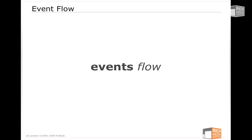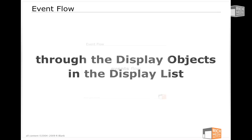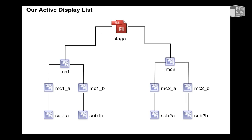What's really important to understand about events inside Flash is not only that they are objects, but that these event objects flow through our movies. Specifically, they flow through the display objects on our display list. So using this sample display list: we have a stage, the stage has two movie clips on it, each movie clip has two movie clips in it, and each one of those has one in it. This is our display list.